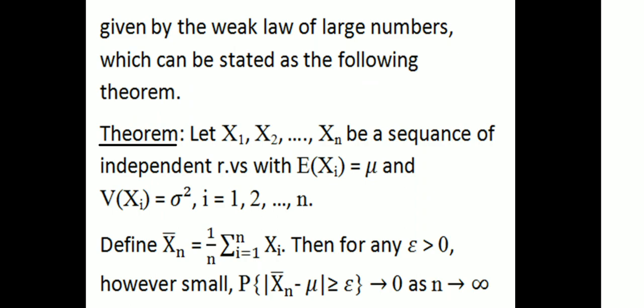Which can be stated as the following theorem. Let X1, X2, ..., Xn be a sequence of independent random variables with expectation of Xi equal to mu and variance of Xi equal to sigma squared, for all i = 1, 2, 3, etc.